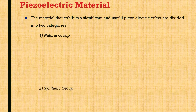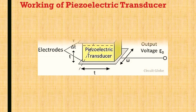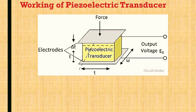Now let us see the working of the piezoelectric transducer. As seen in this figure, there is a piezoelectric crystal and one kind of force is applied to it. Two electrodes are connected to that crystal, and with the help of those electrodes we measure the output voltage.